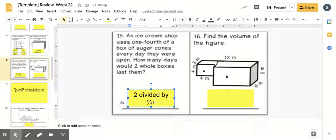You should all know that 2 divided by 1 fourth equals 8. We started with a whole number, we end with a whole number. And we just multiply our whole number times our denominator.